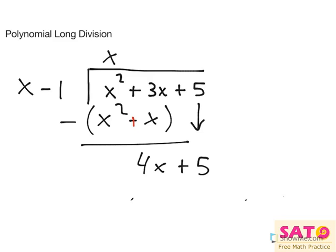So what times x equals 4x? Well, that would be plus 4. So 4x minus 4, subtract.